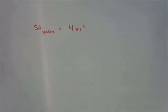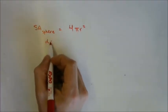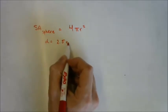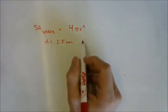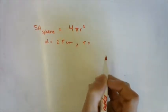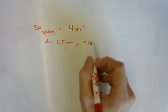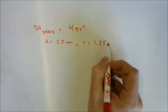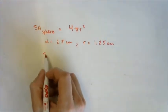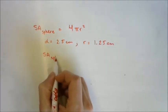So we have the formula. Do we have all the information that we need? We have that the diameter is 2.5 centimeters. Is that helpful? Yeah, we need the radius, and to get the radius I just divide by two. So 1.25 centimeters. Now I can sub in what I know.